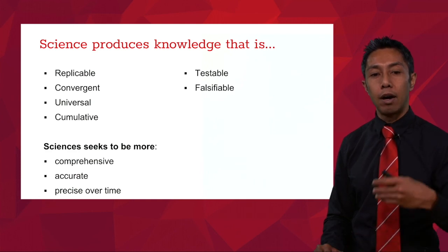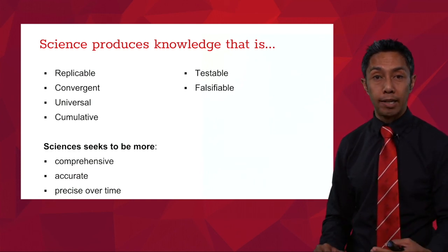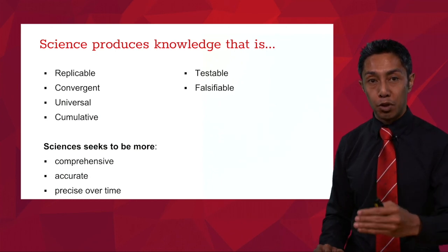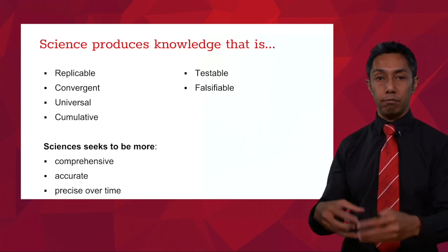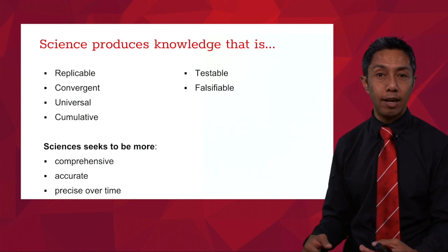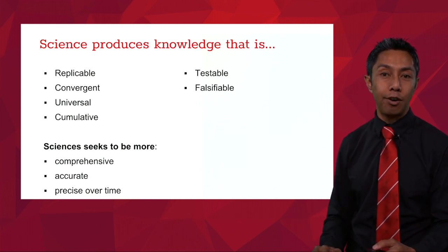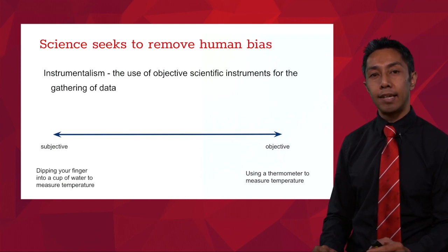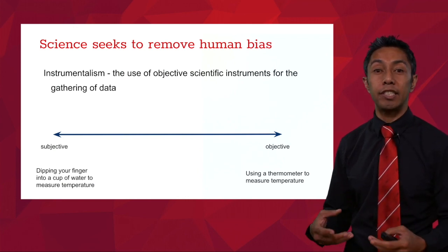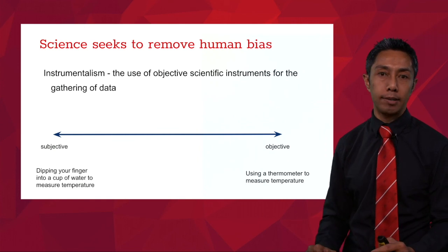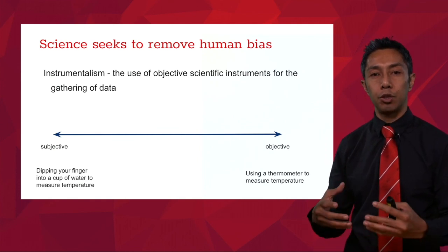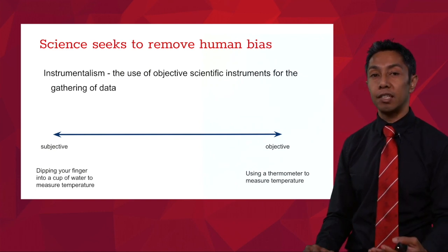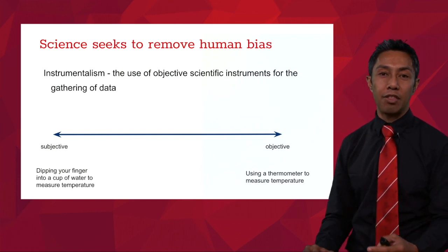In summary, science seeks to be more comprehensive — we want to know more — more accurate and more precise over time. Another thing that science seeks to do is to remove human bias, and that's given rise to a term called instrumentalism: the use of objective scientific instruments for the gathering of data.